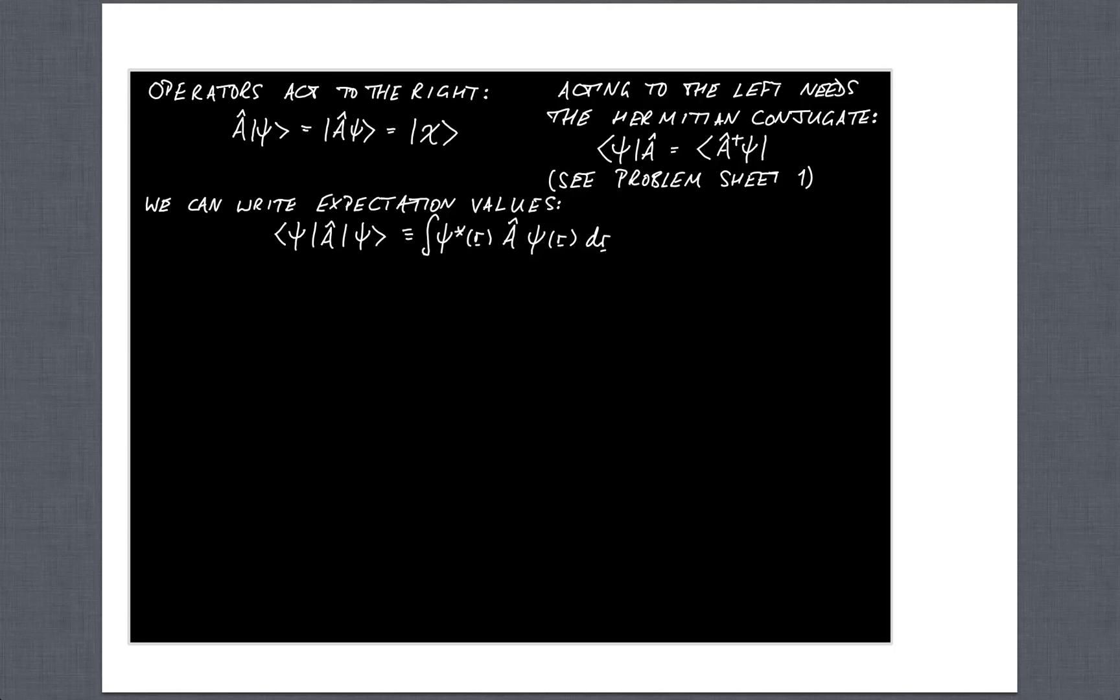If you want to write an expectation value then you take the bracket between psi's and you bracket the operator that you're considering. So in this case we would have bra psi acting on the operator A acting on ket psi which in second year notation we would have written as the integral overall space of psi star A hat psi.